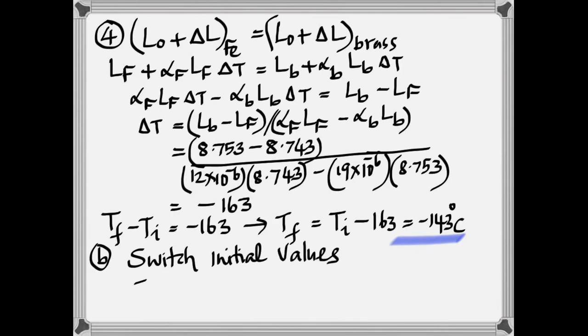Now for the B part, switch the initial values of iron and brass, and calculate in the same way, taking care that you don't get mixed up between the alphas and the original lengths, and you would get the final temperature is 180 degrees Celsius. So this time, you've got to heat it.